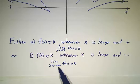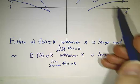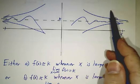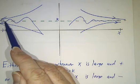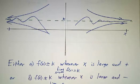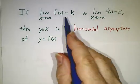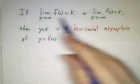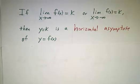Remember, infinity and minus infinity are not numbers. Infinity just means without end — as you go off to the right, farther and farther, you get closer and closer to k. Or as you go out to the left, farther and farther, you get closer and closer to k. So the mathematical statement is: if the limit is k as x goes to infinity, or if the limit as x goes to minus infinity is k, then we have a horizontal asymptote.